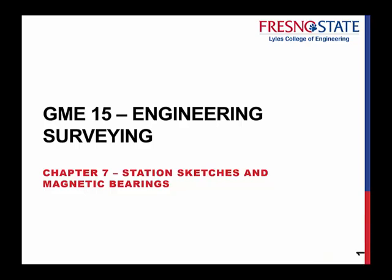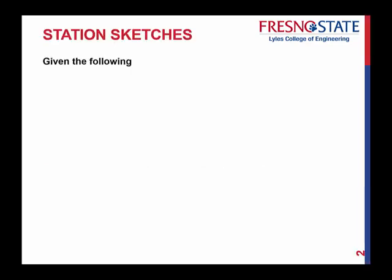To continue on Chapter 7, as we near the end, we want to deal with what we call station sketches and also get into magnetic bearings. Station sketches are key — that's what allows us to visually see how we can compute bearings based upon angles that we turn at certain locations. Let's go right into an example so you can follow these examples and continue to do this type of work for your homework and assignments.